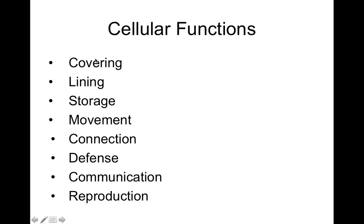What are some of the functions of cells? Cells are involved with coverings and linings. They can store different things — water, sugars like carbohydrates, fat and lipids, and genetic material like chromosomes. Cells are also involved in movement, since some cells are capable of moving around. Some cells connect to each other or provide defense — immune cells are involved in defense. Some cells are involved with communication, like neurons. You have 100 billion neurons in your brain, all highly interconnected — that's how you think and hear and listen.